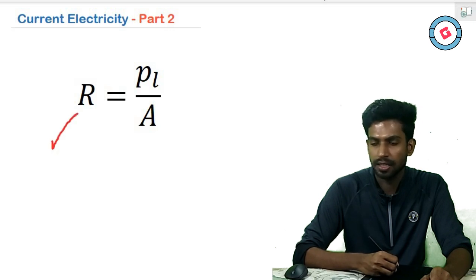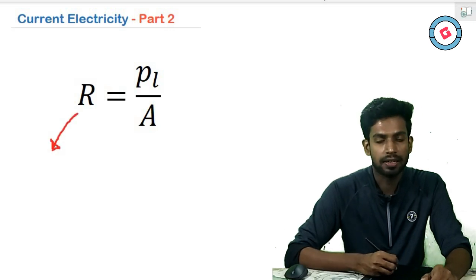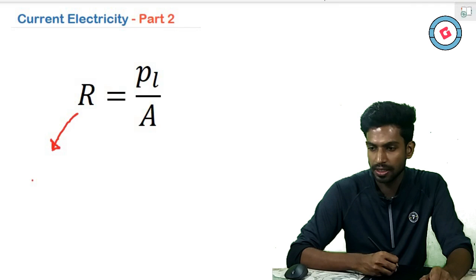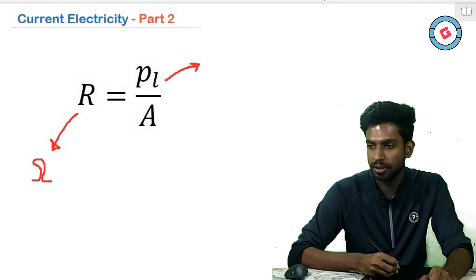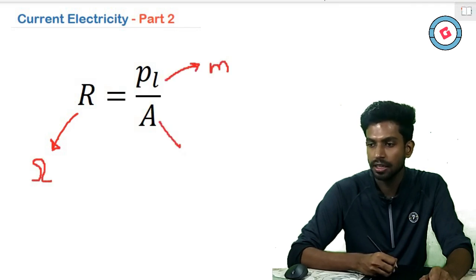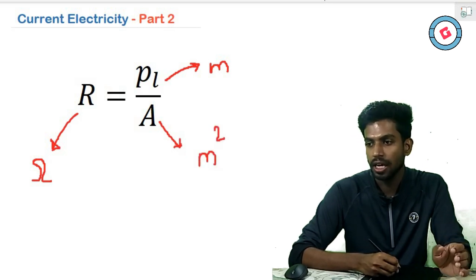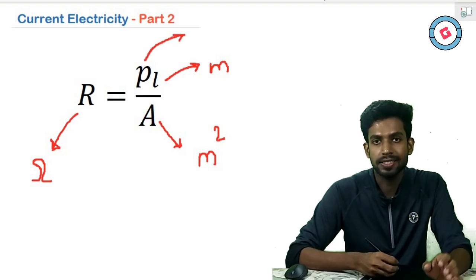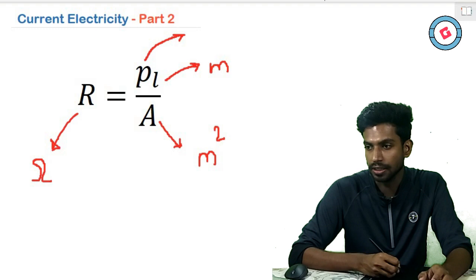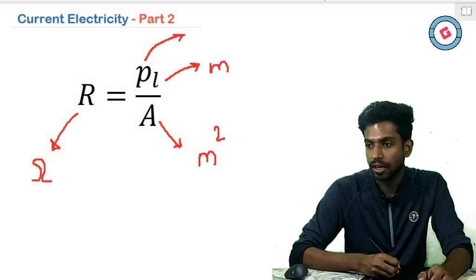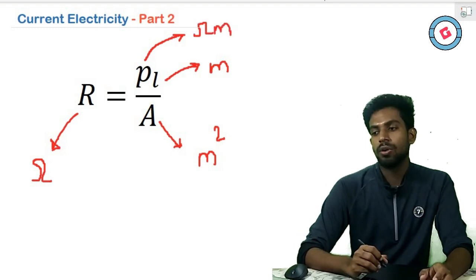The physical quantities are: R is electrical resistance measured in ohms, L is length measured in meters, and A is cross-sectional area measured in square meters. With these units, we get the units for rho (ρ), which is known as resistivity, measured in ohm·meters.